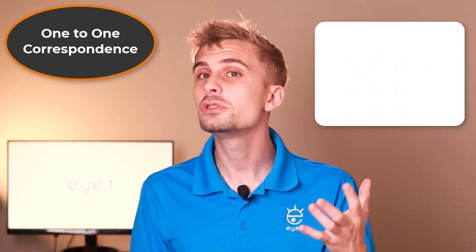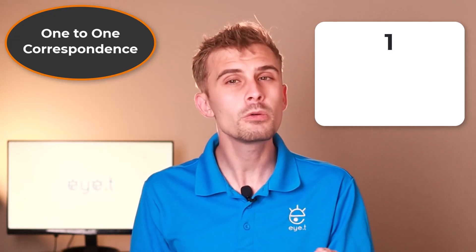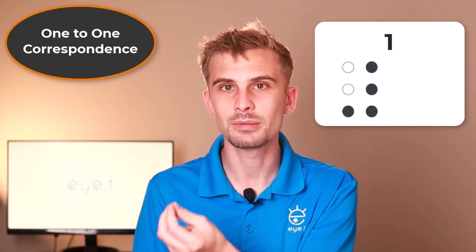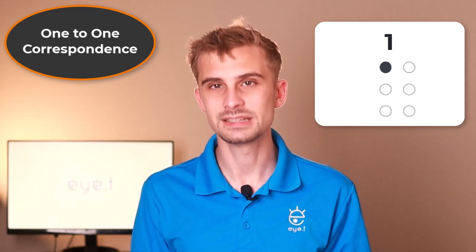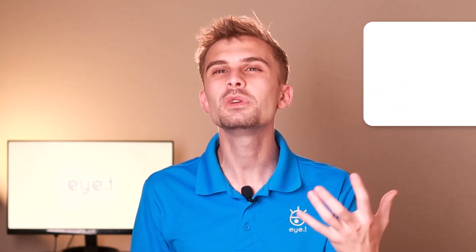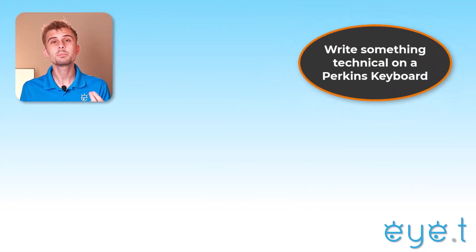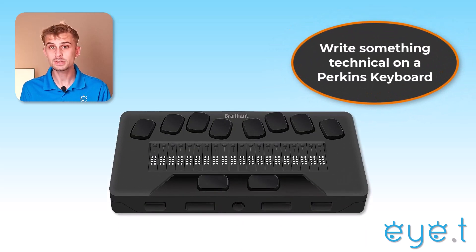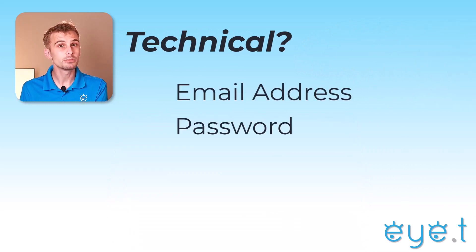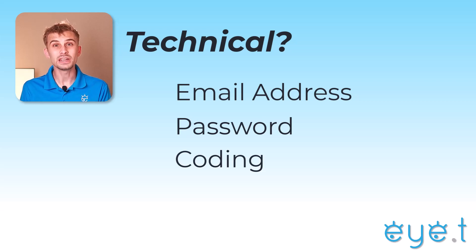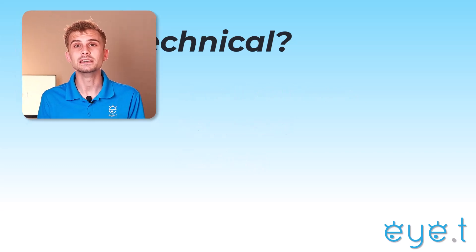Likewise, if you try to type the number one in computer braille, it won't be a number sign and then the number one — in computer braille, that number one will be one braille symbol. So when would you need to use computer braille? Anytime you're using a braille display with a Perkins-style keyboard like this one and you need to write something technical — that might be an email address and a password to sign into a website, or if you're getting into coding, it could be a programming language inside a text editor or an IDE.